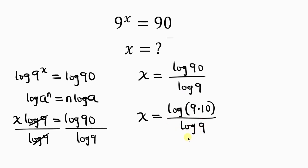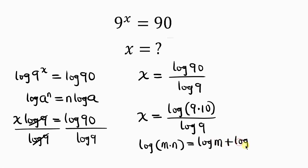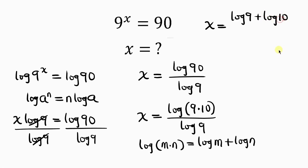Our next step would be to apply the law of logarithm, which says when I have the log of m times n, this is the same as log m plus log n. So let's apply this law to the numerator. What we have now becomes log 9 plus log 10, all over the denominator, which is log 9.